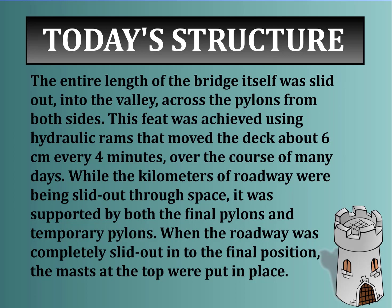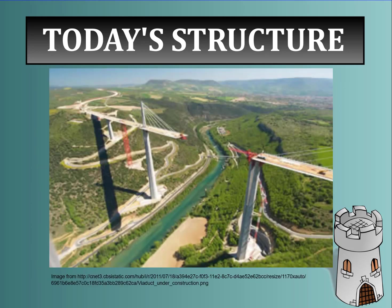When the roadway was completely slid out into its final position, the masts at the top were put into place. From either end they pushed the bridge onto each pylon until it was set, and then it connected in the middle. They built the bridge roadway before they slid it out - that's amazing.